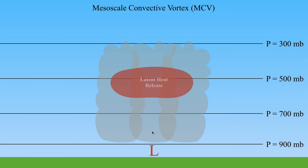This is actually the exact same mechanism that hurricanes are formed by. Hurricanes are also formed by copious amounts of latent heat release in the mid-levels, bringing lower pressures down to the surface and higher pressures above the thunderstorm activity. The main difference is that in hurricanes this process is much more intense — there's far more moisture present over tropical waters than over land, so you get much more rapid development of a cyclone at the surface and a much more rapid anti-cyclone forming aloft.